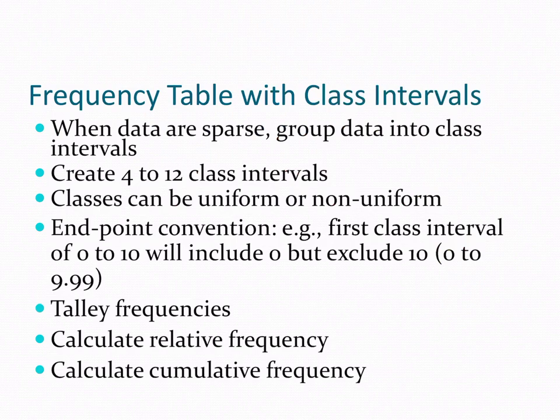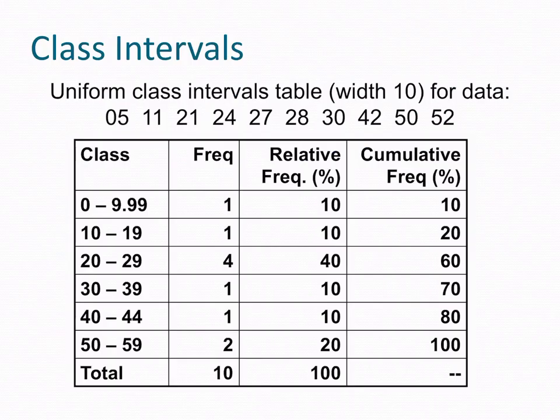Frequency tables with class intervals. So when data are sparse data groups in the class or intervals, you want to create between 4 to 12 class intervals. Classes can be uniform or non-uniform, right? Depends on the shape. Endpoint convention first class interval of 0 to 10 will include 0 but exclude 10. And then you have tally frequencies, calculate relative frequency, calculate cumulative frequency. So now we're going to go into the class intervals and show you what this kind of looks like.